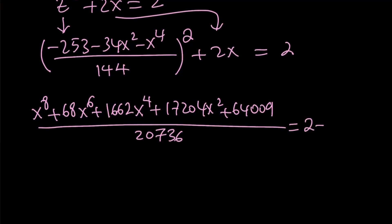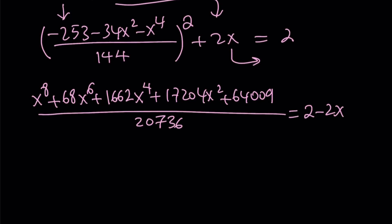And then that is equal to 2 minus 2x. So I'm subtracting this 2x here. Great. So now we're going to cross-multiply and get an 8th degree equation. And then we're going to go for the solution of that 8th degree equation.